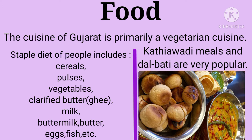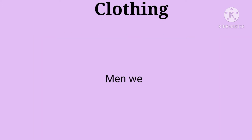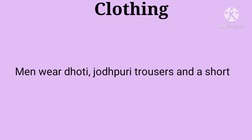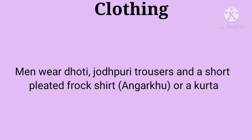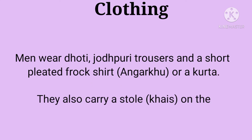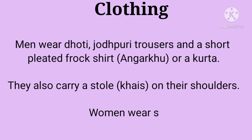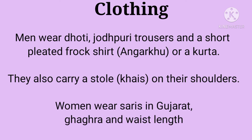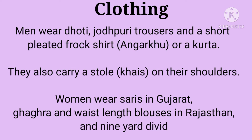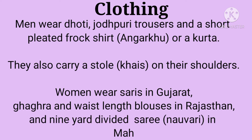This is the image of dal bati, which is a very popular food of the area. Now we will study about the attire, that is clothing. Men wear dhoti, Jodhpuri trousers, and a short pleated frock shirt called angharkho or a kurta. They also carry a stole called khais on their shoulders. Women wear sarees in Gujarat, ghagra and waist-length blouses in Rajasthan, and the nine-yard divided saree also called novari in Maharashtra.